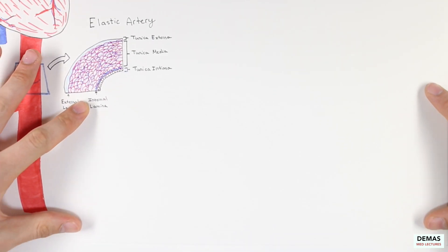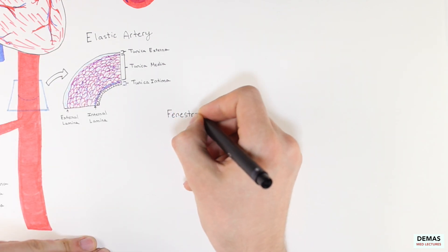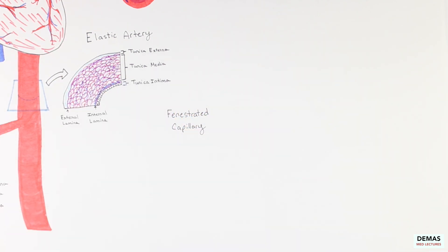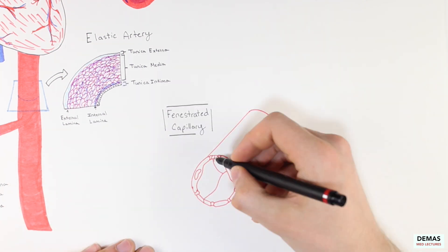Now we are going to move down the page and focus on the second capillary, the fenestrated capillary. These capillaries are different than the continuous capillaries that we discussed previously. I'm going to let you watch this come to life and think about what makes it different.